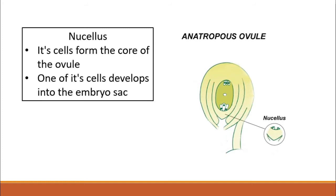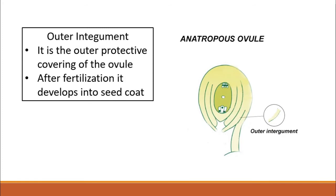The nucellus forms the core of the ovule. It is made up of diploid parenchymatous cells. Eventually, one of the nucellus cells develops into the embryo sac, which lies in the center of the ovule. So not all cells — only one of the nucellus cells gives rise to the embryo sac.